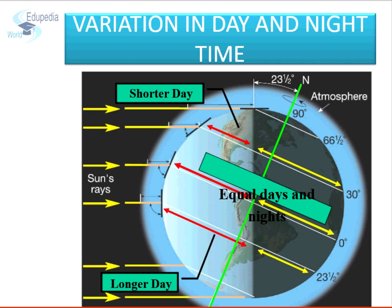On the other hand, as we move towards the south of the equator, the days are getting longer and the nights are getting shorter. Places beyond 66.5 degrees south are experiencing day for 24 hours.